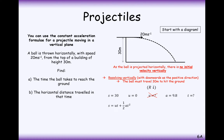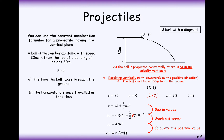We're going to use a SUVAT formula that links S, U, A, and T together. Substituting in the values: 30 equals U times T, the initial speed is 0, plus half times A, which is 9.8, times T squared. We can simplify this to 30 equals 4.9T squared. Dividing by 4.9 and square rooting gives plus or minus 2.5, but we only take the positive value because a negative time doesn't make sense.